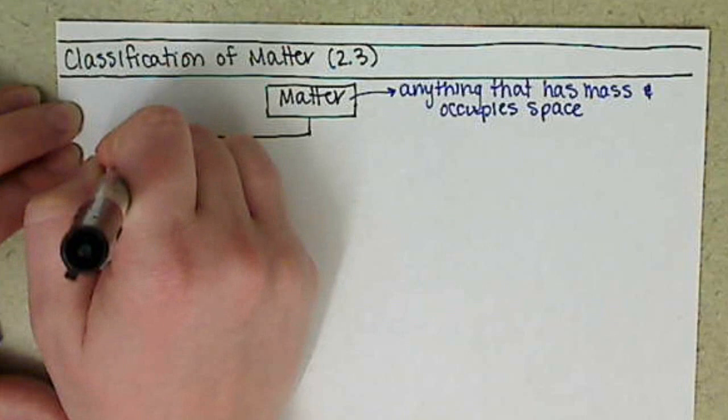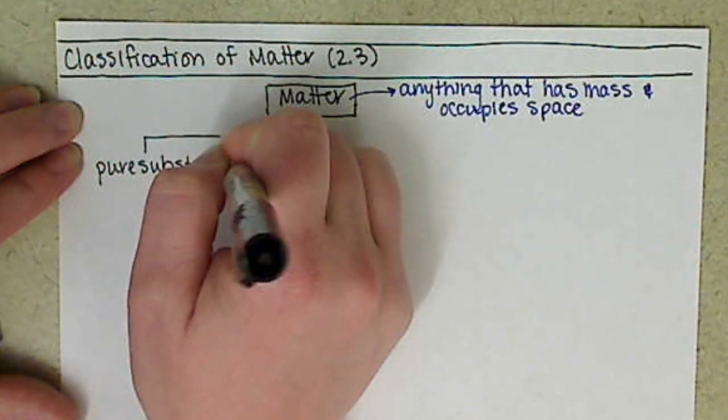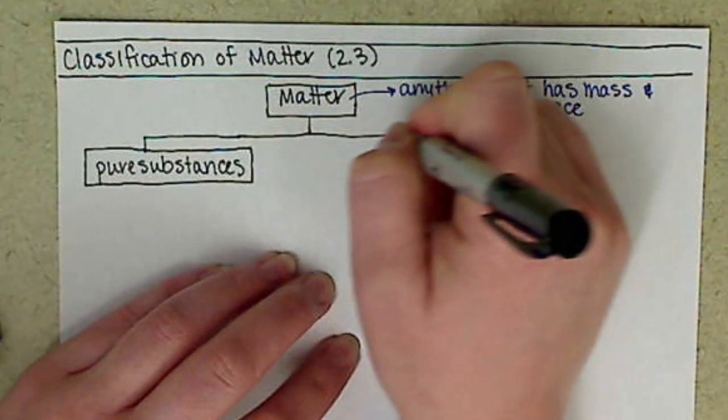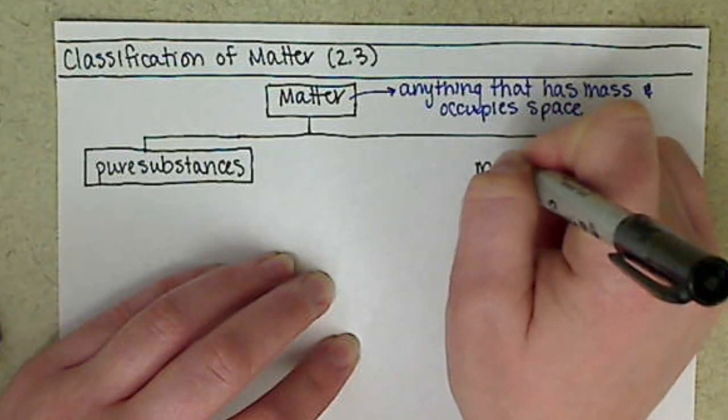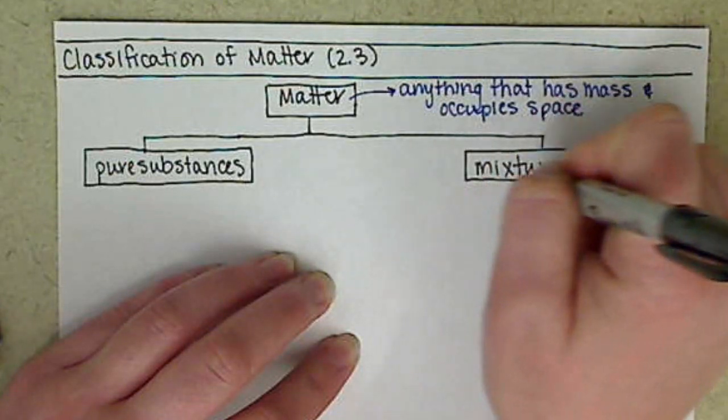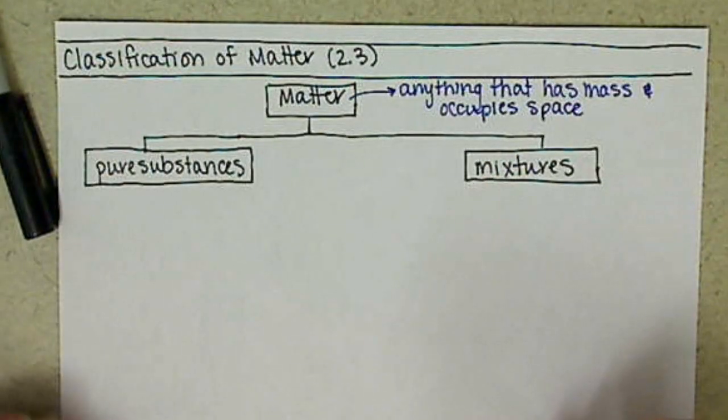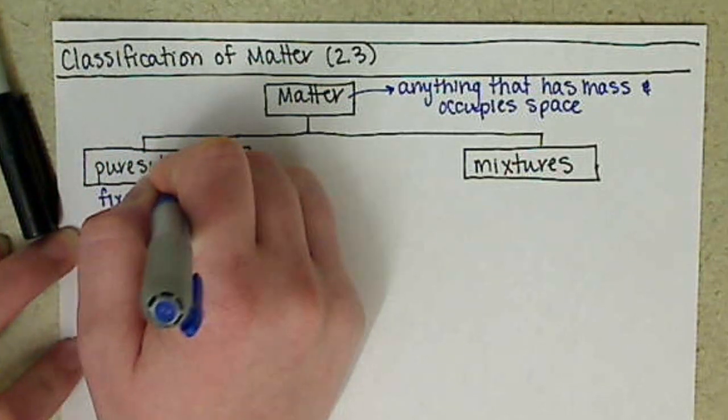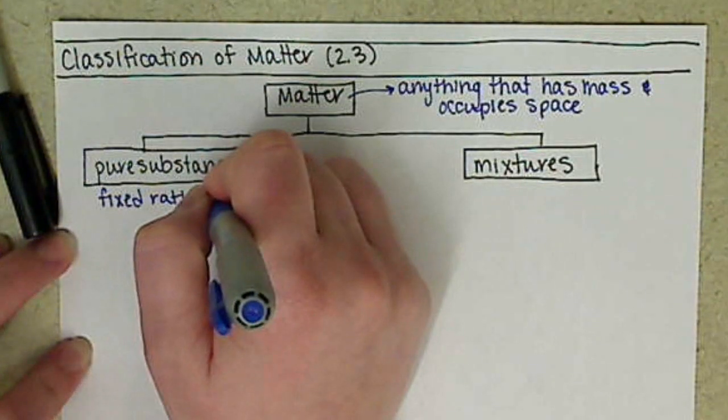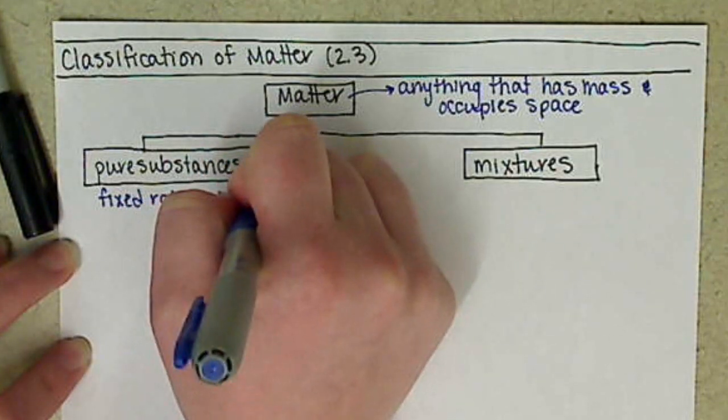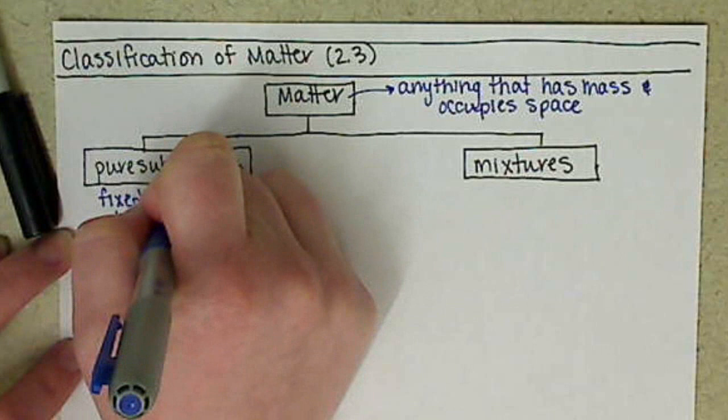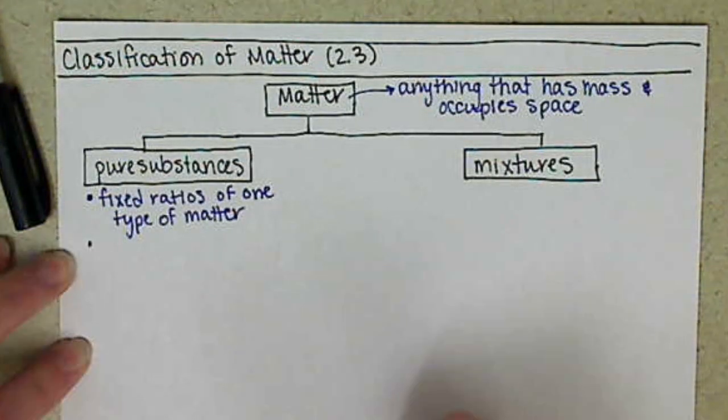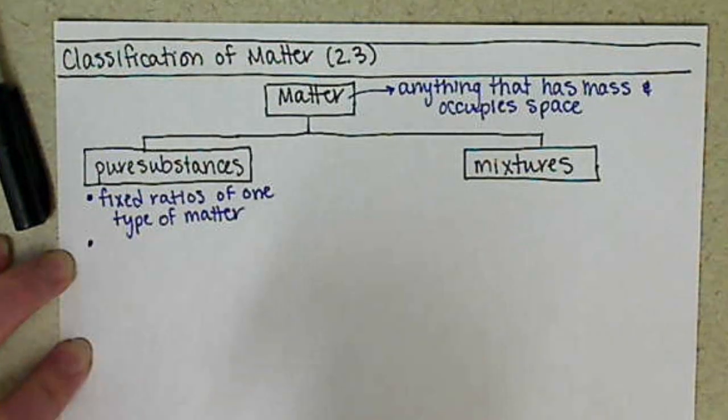We have our pure substances or mixtures. For our pure substances, these are going to be substances that have fixed ratios and they're only going to have one type of matter. Another description for our pure substances is they have to be separated by chemical means.